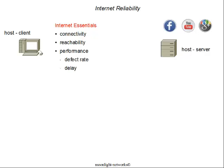We are expecting three essentials for that session to meet our expectations. First is connectivity — there must be a way for the host client to reach the host server and get the content back. Secondly, reachability — the IP address of the host server must be known to the host client. Finally, performance must be acceptable: the defect rate and delay must be within our tolerance. For video, we don't expect frame freezes or pixelation, and for VoIP we don't expect delays exceeding what we can tolerate on a phone call.